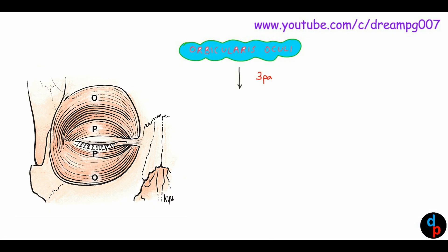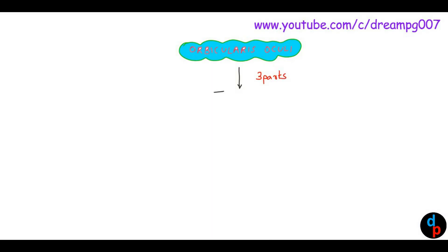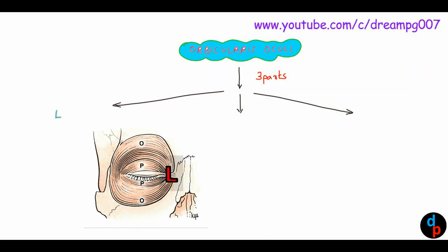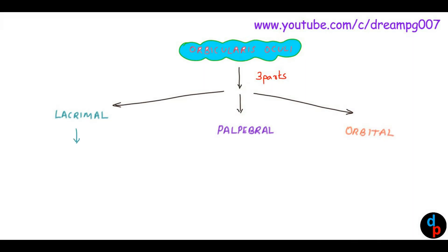This is the orbicularis oculi muscle. It has three parts: lacrimal part, palpebral part, and orbital part. We will look into each of the following.